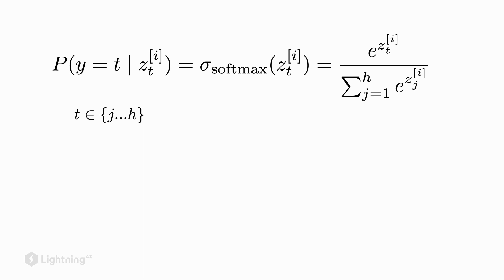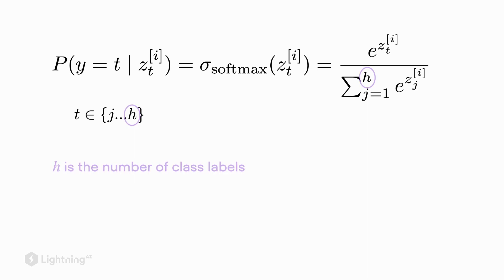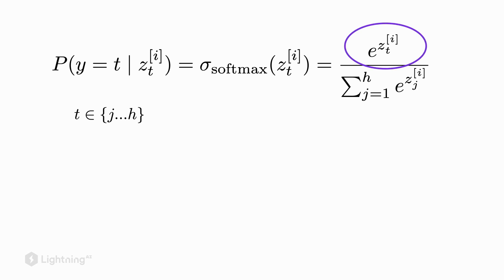Here we are denoting the values j to h as the minimum or the first class label, and h corresponds to the largest class label. We have this fraction where in the numerator we have e to the power of the net inputs — similar to what we had with the logistic activation function.